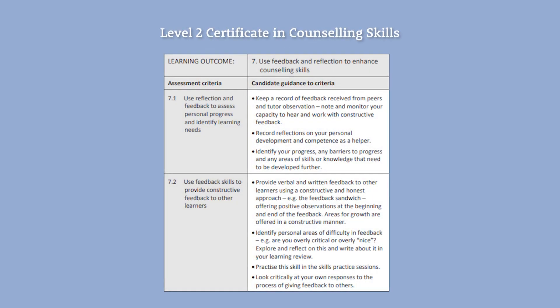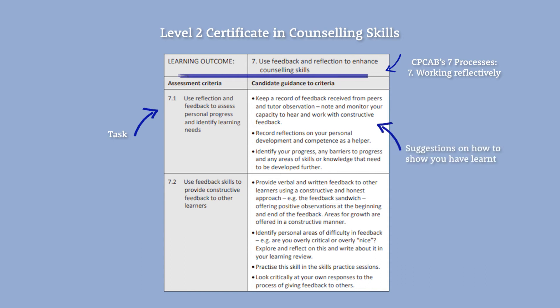In this extract, we're looking at the seventh and final learning outcome from our Level 2 Certificate in Counselling Skills. The learning outcome here is to use feedback and reflection to enhance counselling skills. The assessment criteria explains the task that needs to be completed, and the bullet points act as guidance on how to evidence the assessment criteria.